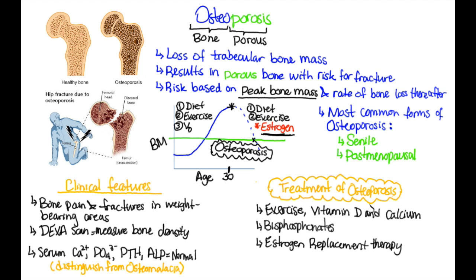Estrogen replacement therapy is debated; however, theoretically it would be helpful because estrogen protects against the loss of bone. Glucocorticoids are contraindicated because they increase the risk of osteoporosis. In summary, osteoporosis is due to reduction in trabecular bone mass resulting in porous bone with an increased risk for fracture. This risk is based on peak bone mass, and several factors determine how quickly you reach that peak and how quickly you descend from it.